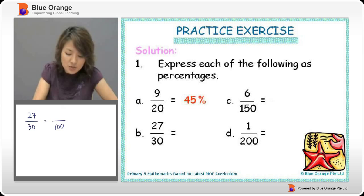That's to try to reduce it first, because you will see that this is not the lowest term. So we reduce by 3, we get 9. By 3, we get 10. So it's 9 over 10. From here, we can change 10 to 100 by multiplying by 10.